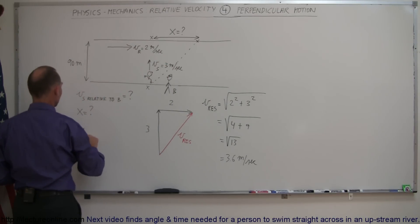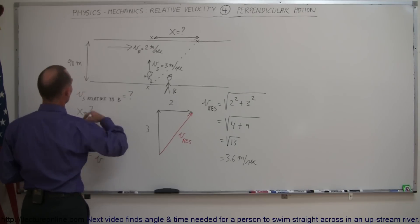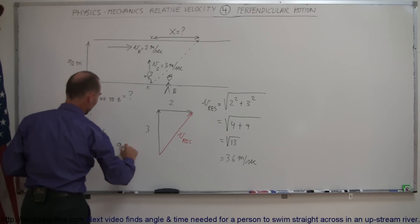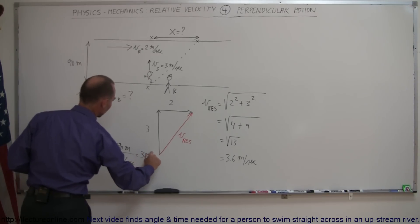So therefore we can say that distance equals velocity times time or time equals distance divided by velocity. He's swimming a distance of 90 meters and he has a velocity of 3 meters per second. So you can see that would be 30 seconds.